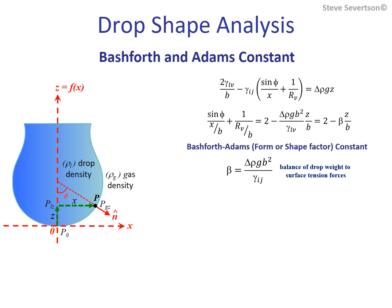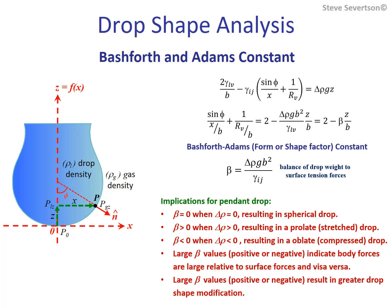Based on the value of beta, we draw conclusions regarding the influence of gravitational forces on, for example, a pendant drop. Beta equal to zero (when delta rho equals zero) results in a spherical drop. Beta greater than zero (when drop density is higher than the surrounding fluid) results in a prolate, stretched drop. Beta less than zero (when drop density is lower than the surrounding fluid) results in an oblate, compressed drop. Large beta values, positive or negative, indicate that body forces are large relative to surface tension.